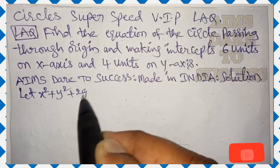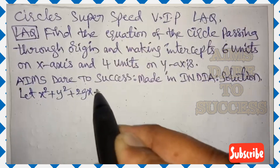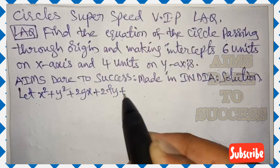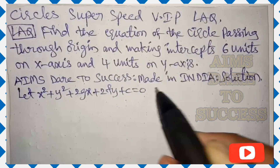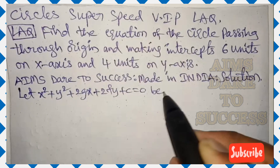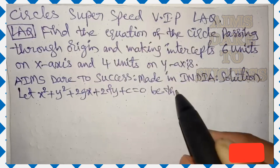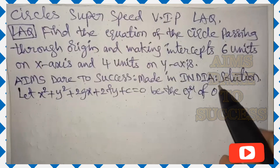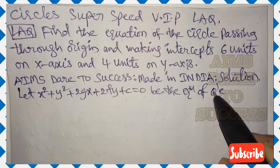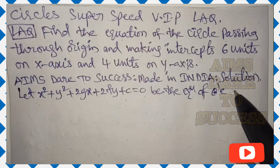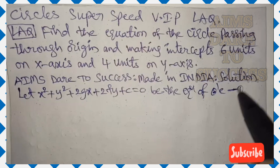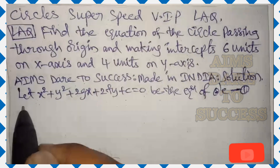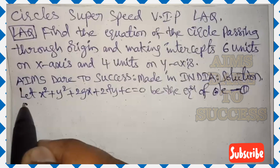Let's start our journey. Let x² + y² + 2gx + 2fy + c = 0 be the equation of the circle. Let it be equation 1. This is the standard equation of the circle form.